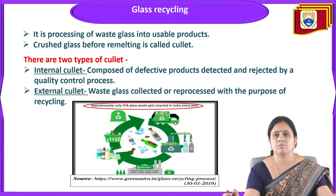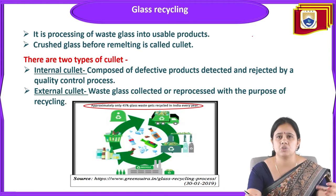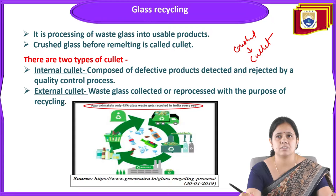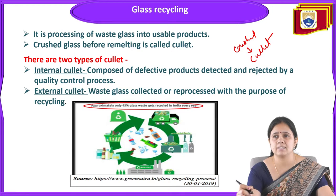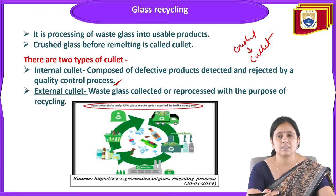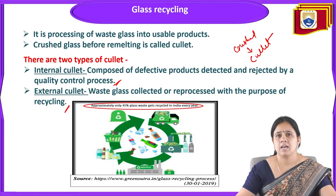Now let's look at how glass recycling is done in industry. Glass recycling is the processing of waste glass into a usable product. Glass should be crushed before remelting, and this crushed glass is called cullet. There are two types of cullet: internal cullet, which is composed of defective products detected and rejected by the quality control process, and external cullet, which is waste glass collected or reprocessed with the purpose of recycling.